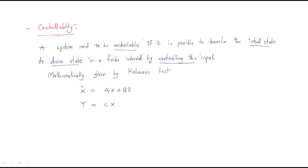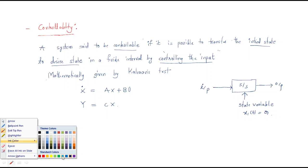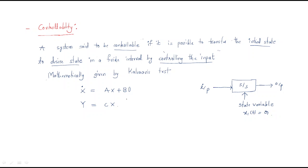This is done by controlling the input. Consider a system that takes some input and gives some output, and has some state variables. For example, the initial state x1(t) equals some value 'a'. For this system we need to control the system — a system is said to be controllable if it is possible to transfer its initial state to a desired value.